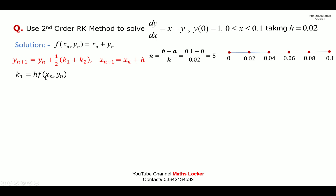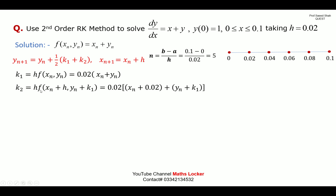k₁ = h·f(x_n, y_n). Mapping f(x_n, y_n) = x_n + y_n, with h = 0.02, gives k₁ = 0.02(x_n + y_n). For k₂: k₂ = h·f(x_n + h, y_n + k₁). Mapping the arguments, with h = 0.02, gives k₂ = 0.02·[(x_n + 0.02) + (y_n + k₁)].